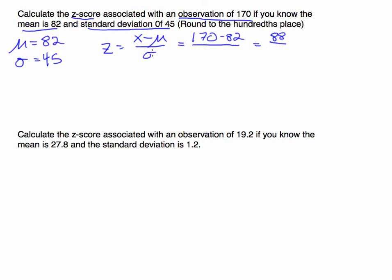Now when I divide by the standard deviation of 45, when I take 88 and divide it by 45, I'm finding how many times does 45 go into 88. In other words, how many times does that standard deviation go into the difference? So if you take 88 and divide it by 45, you get 1.95555. And typically we're going to round to the hundredths place. So this would be approximately 1.96. That's the z-score.